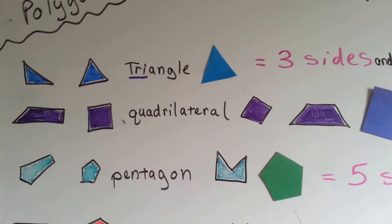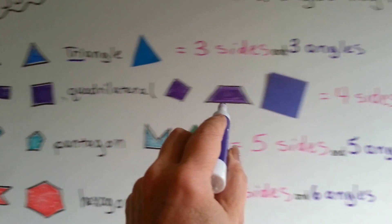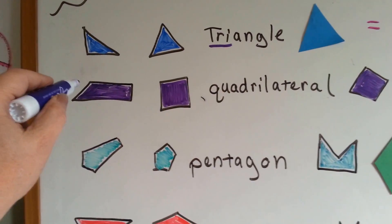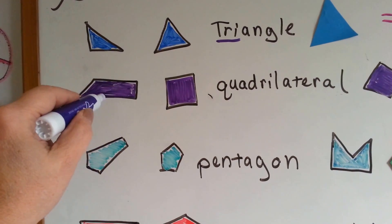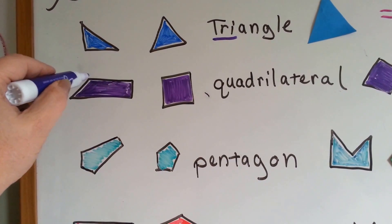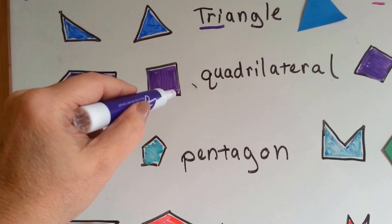Let's look at a quadrilateral. A quadrilateral has four sides and four angles. And all these purple ones are quadrilaterals. One, two, three, four sides. One, two, three, four sides. And one, two, three, four angles. One, two, three, four. Four sides and four angles.